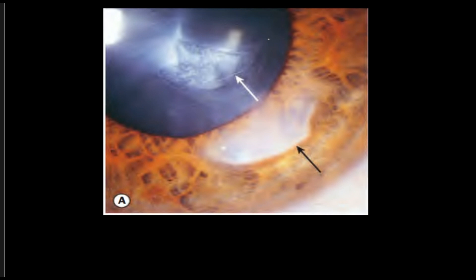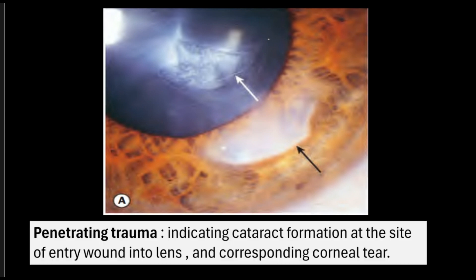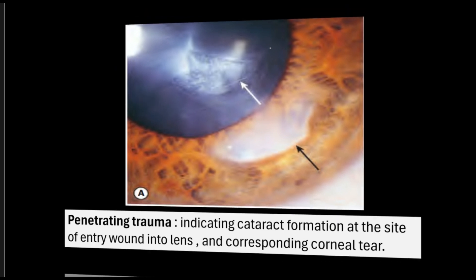Apart from blunt trauma, even penetrating trauma can lead to cataract formation. In this picture, cataract formation is present at the entry site and there is a corresponding corneal tear — a white crescent visible on the cornea, labeled with a black arrow.